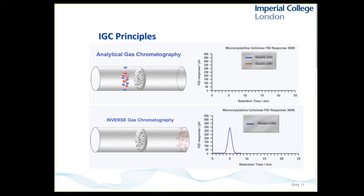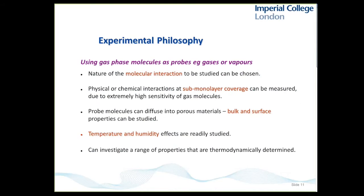We're going to be using gas phase molecules as our probe — hexane vapour, octane vapour, ethanol vapour, hexanol vapour. We can use a range of different vapours to probe the surface chemistry of my unknown powder or particulate material. These molecular interactions between the molecules in the gas phase and my unknown solid form the whole basis of this technique. We can characterise surface properties of my materials, and sometimes if the materials are amorphous, I can characterise bulk properties as well. The technique has the additional benefit that effects of temperature and humidity can also be introduced into the study relatively easily.